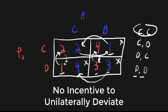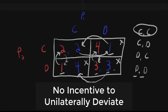Thus CC — confess, confess — is the Nash equilibrium of this game. Of course, the troubling part about this is that in equilibrium both players earn a reward of two, but if they could somehow both keep their mouths shut, they would get a reward of three. But in this case each player has an incentive to change their strategy to confess. This is the Nash equilibrium of the Prisoner's Dilemma.